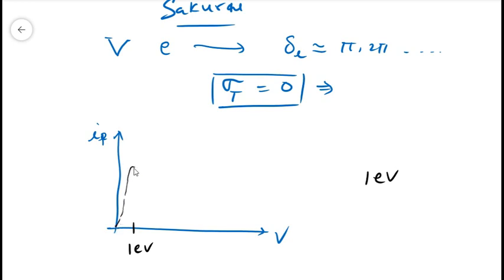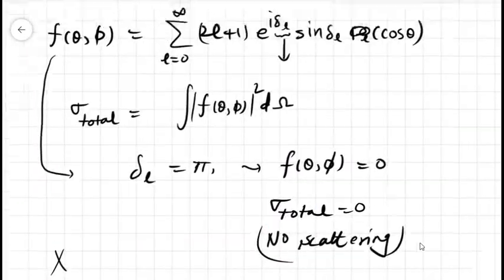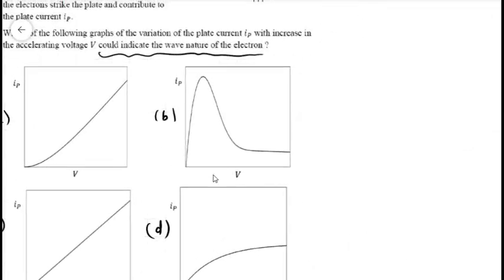And after that, if we increase the accelerating potential, the energy of the electron will also increase and the scattering probability also increases. And so, the graph should look something like this, and that matches with the B option. Thank you.